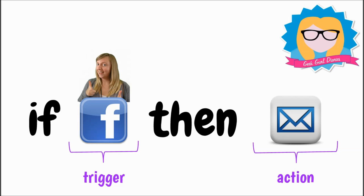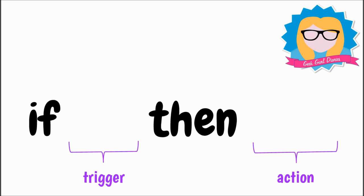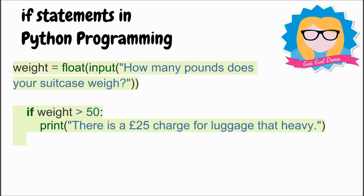If something triggers then something else will happen. If I were to apply this to computer programming — and in particular the programming language Python — you can see an if statement in this piece of code. If the weight of the object is greater than 50, then we will get a display that says there is a £25 charge for luggage that heavy. It's a really simple and easy thing to identify in code, and if we understand if statements it's a great start to understanding how computers work.